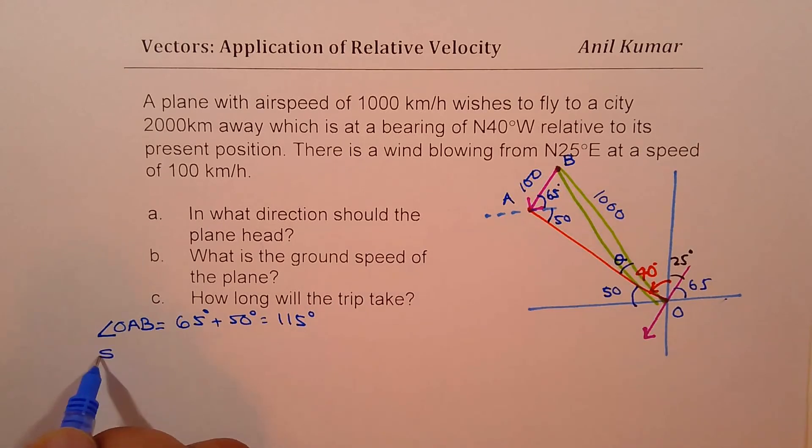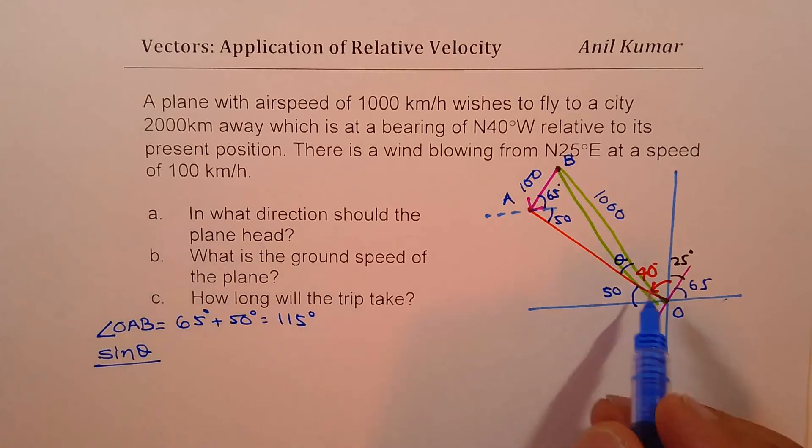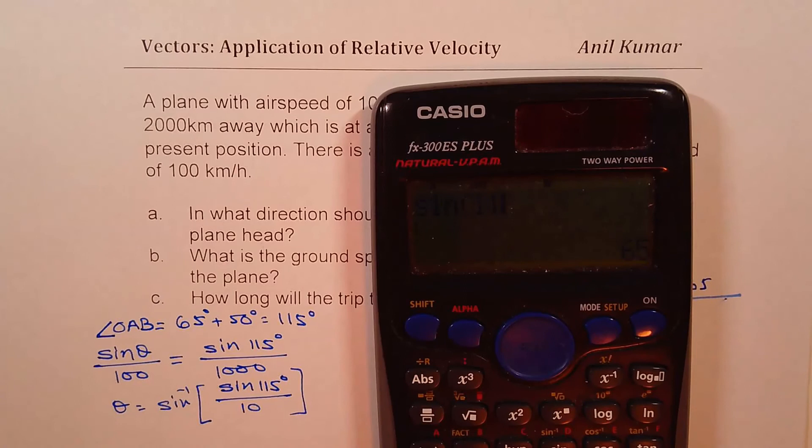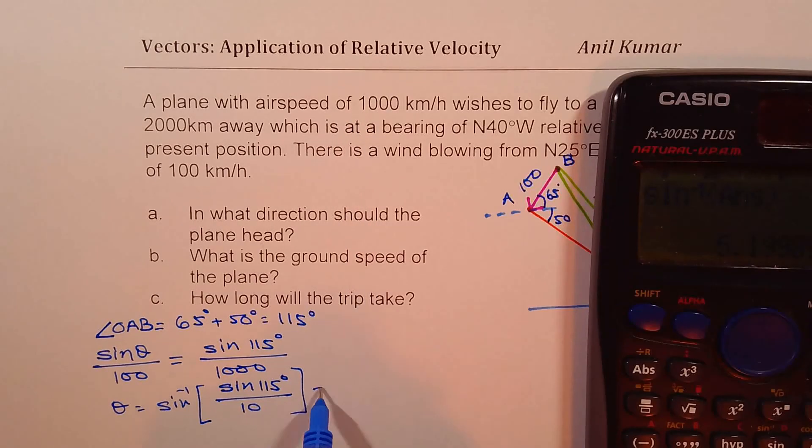So in that case, sine theta over the side opposite is 100, should be equal to sine of 115 degrees over 1000, and therefore, theta will be equal to sine inverse of 100 over this means divided by 10, so we can write this as sine 115 degrees over 10. So let's find this out. So we have sine of 115, we'll divide this by 10, and then we'll take sine inverse of our answer, which gives us 5.199 or 5.2 degrees.